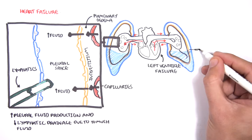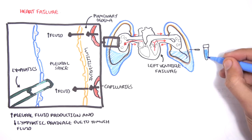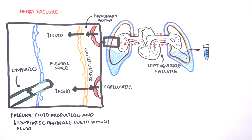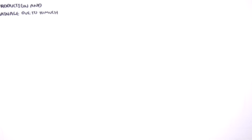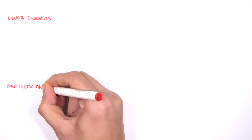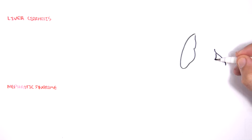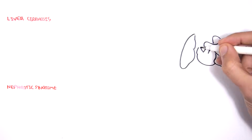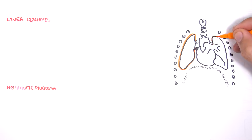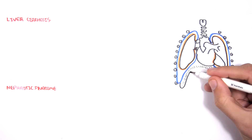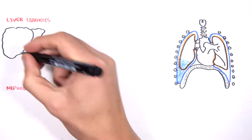The pleural fluid typically has raised brain natriuretic peptide (BNP), which is a marker for ventricular strain. Other causes of transudative pleural effusions we talked about were liver cirrhosis and nephrotic syndrome. There are many factors which lead to pleural fluid in these examples, but the main one would be low protein levels in the blood.